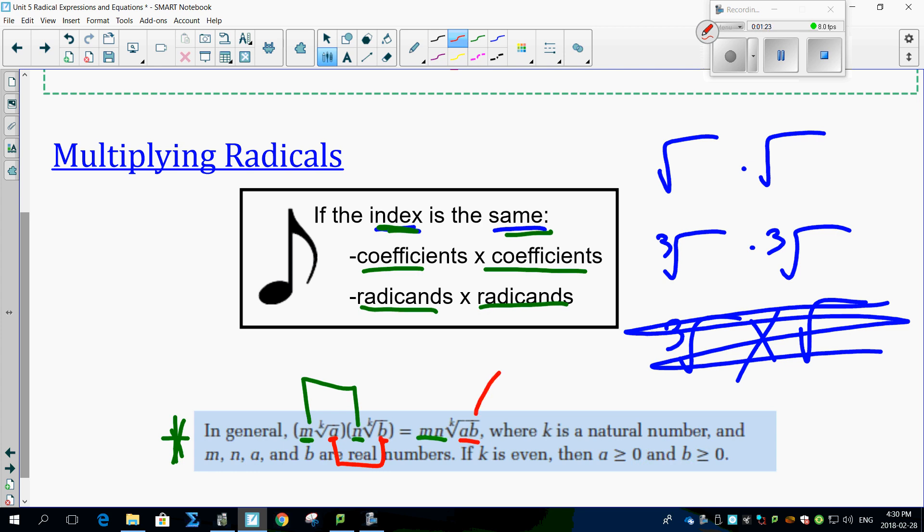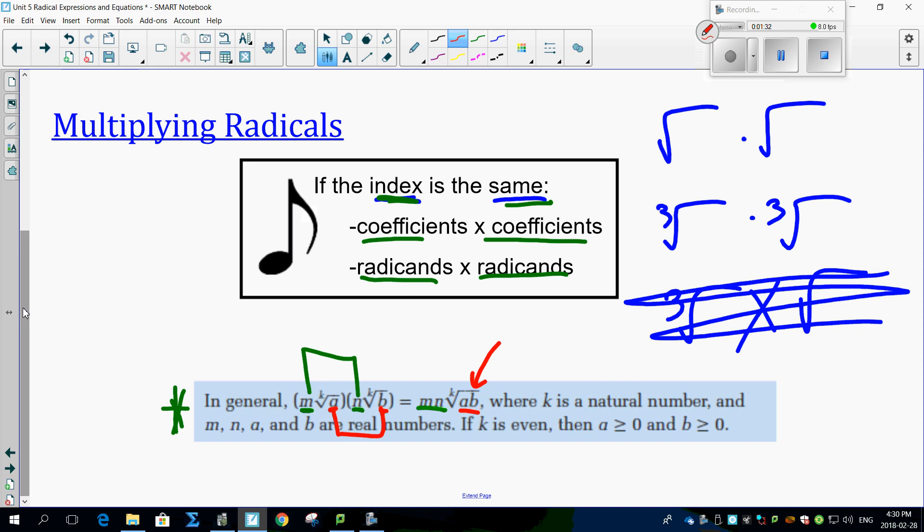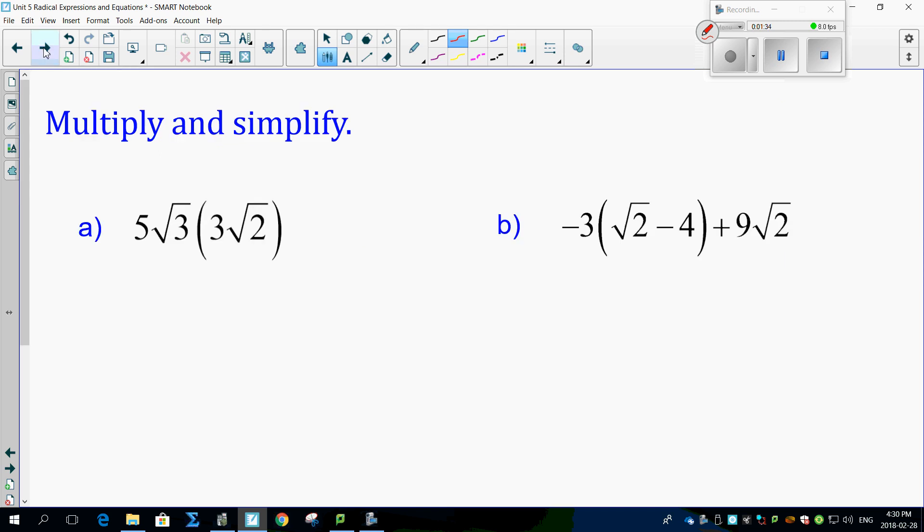Now sometimes you might have to simplify that square root or cubed root AB thing. We'll worry about that later when we get to that point. Let's look at an example. Here we go. Remember, numbers times numbers.